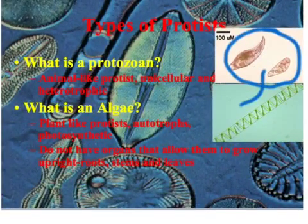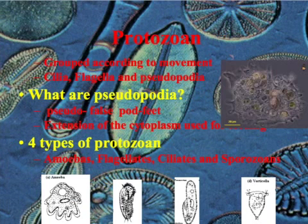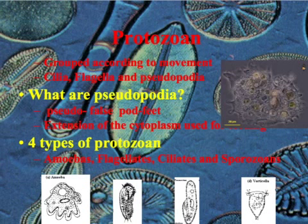Algae do not have organs, and they lack the structures to grow upright roots, stems, and leaves. Continuing on, we're going to talk about the protozoans. Protozoans can divide into four different types — they're grouped according to their movement. They can move by cilia, flagella, or pseudopodia.